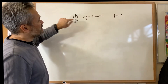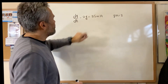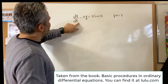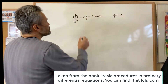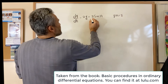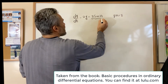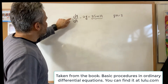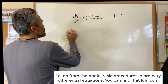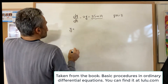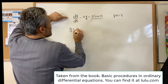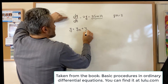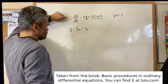Let's solve this initial value problem. This is a linear differential equation — it's a non-homogeneous differential equation, and this is the non-homogeneous part. The general solution of this linear differential equation is the solution of the homogeneous plus the particular solution.